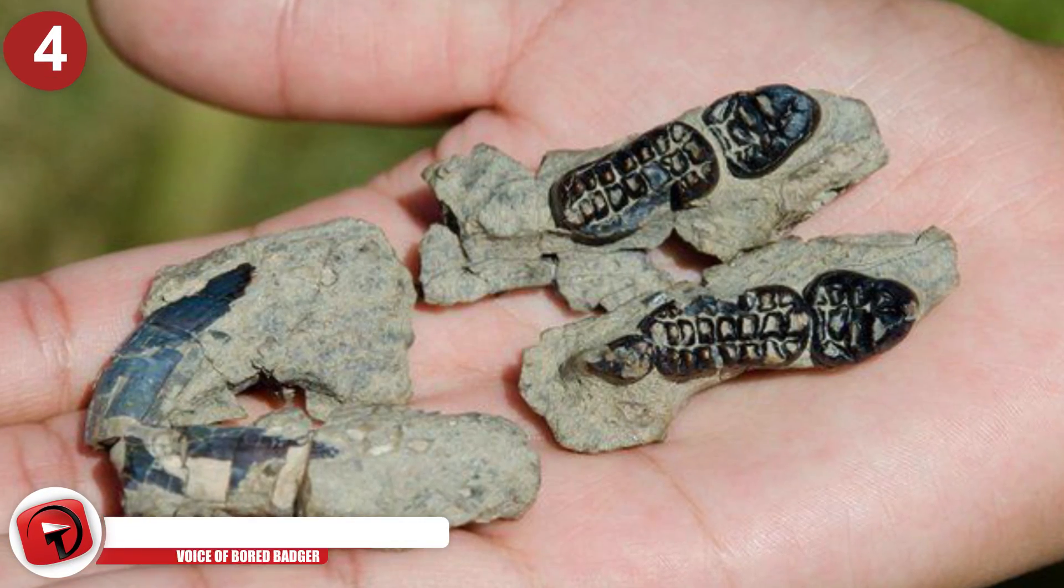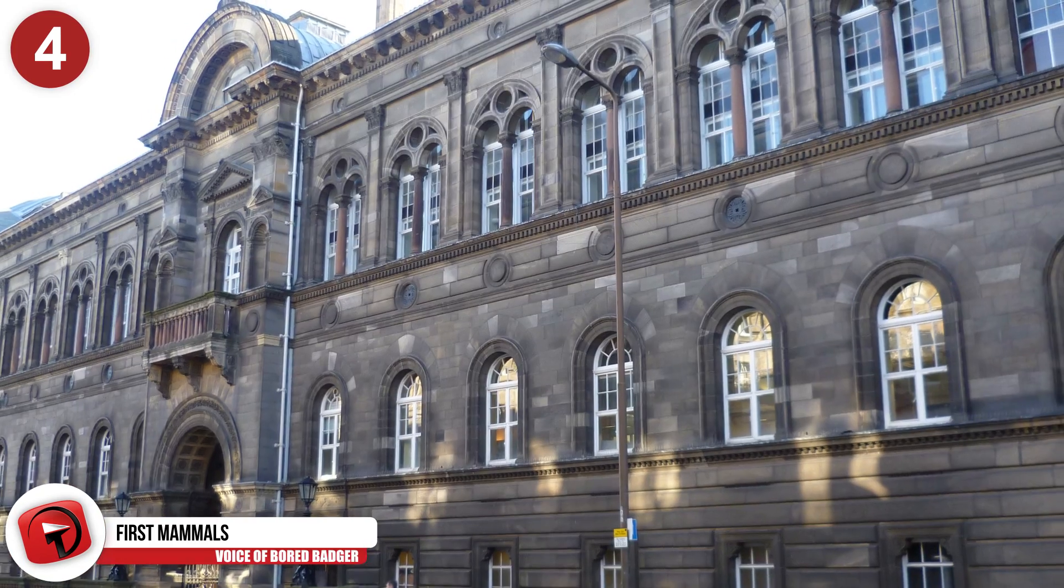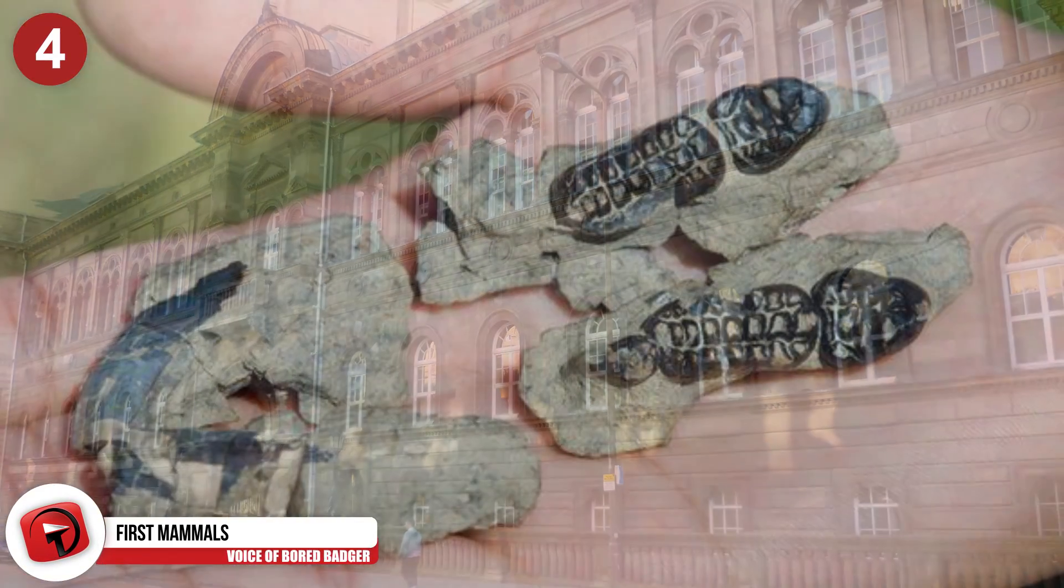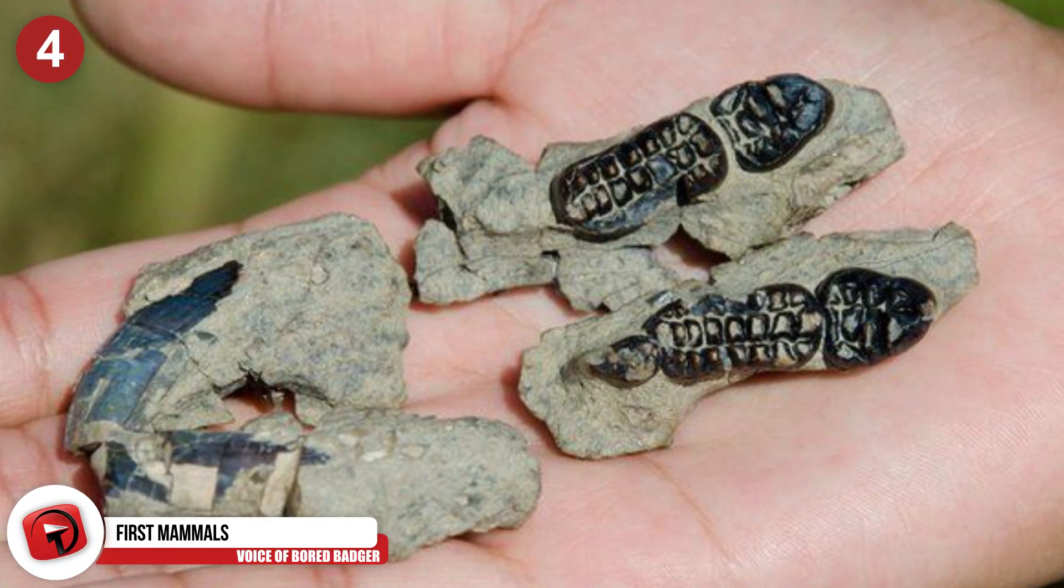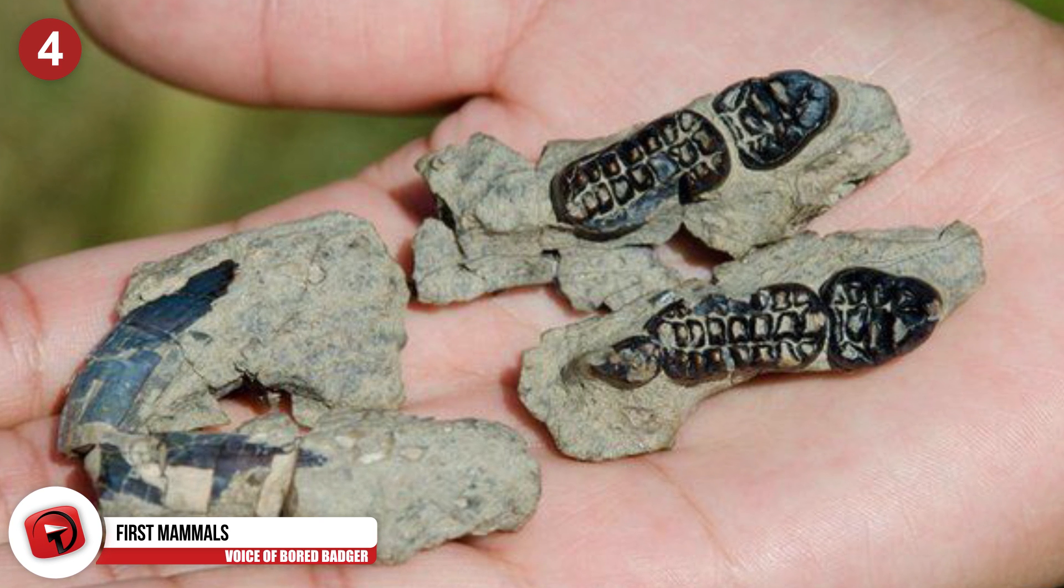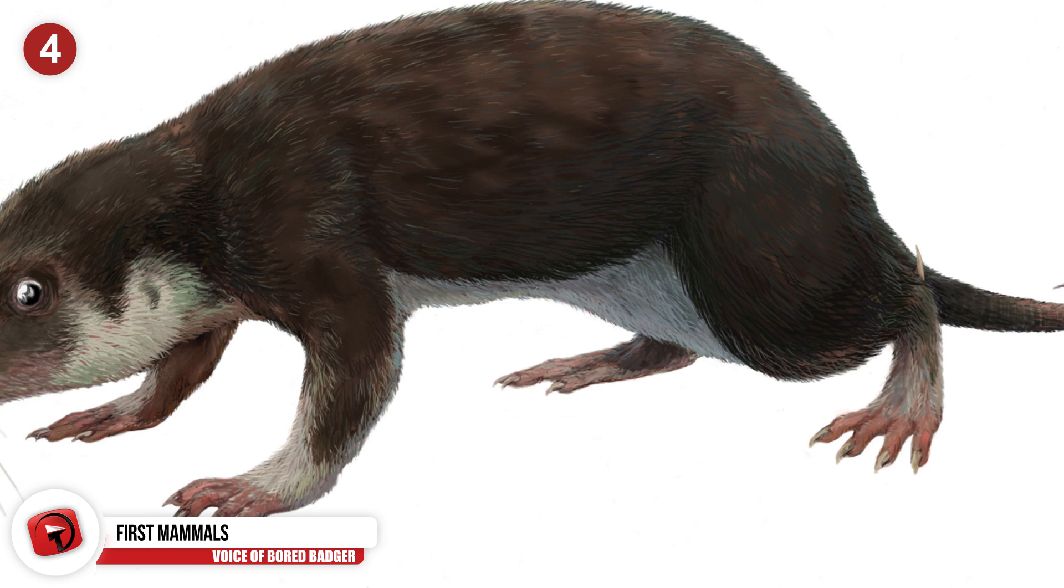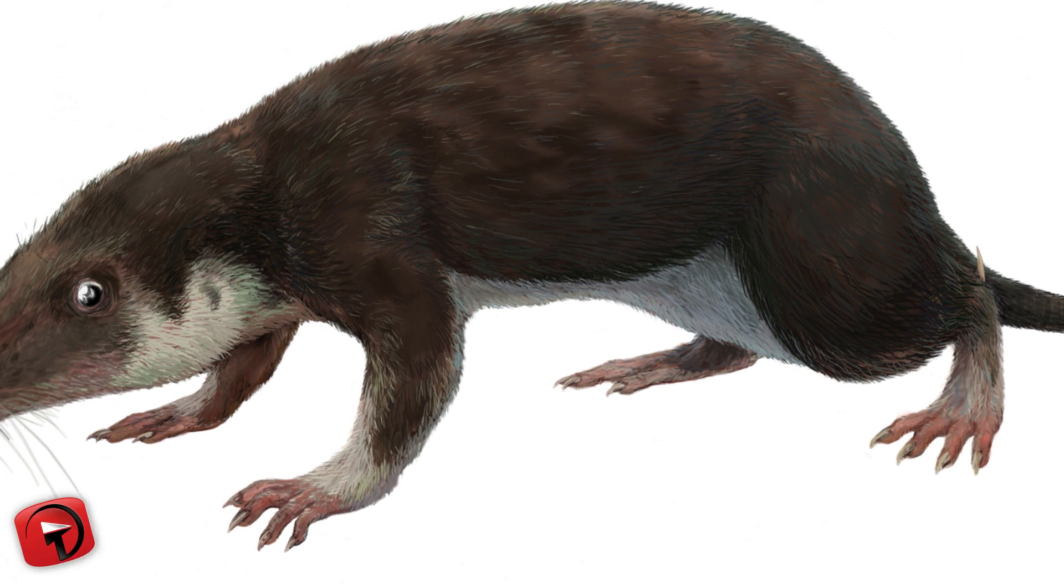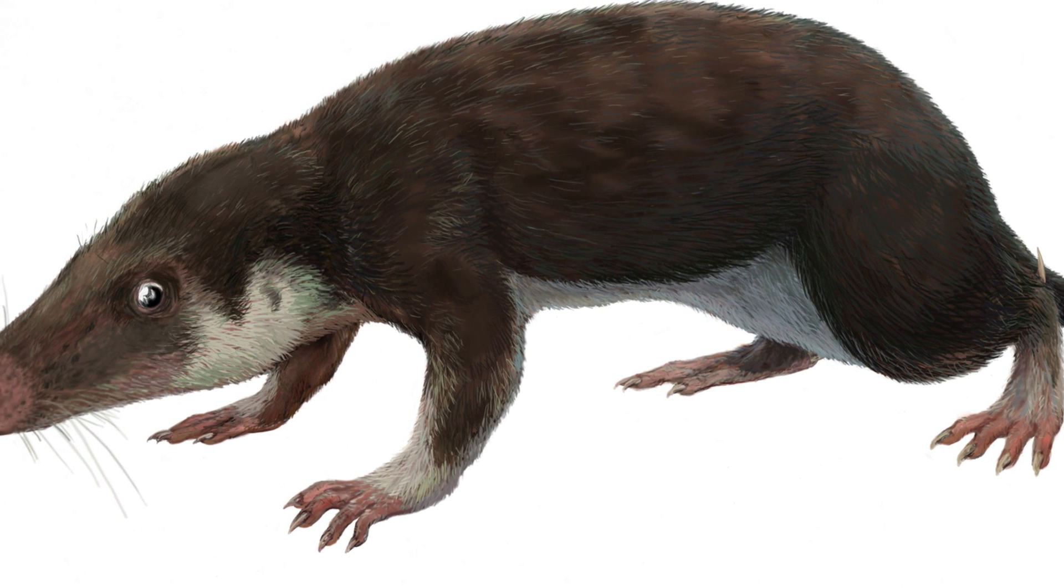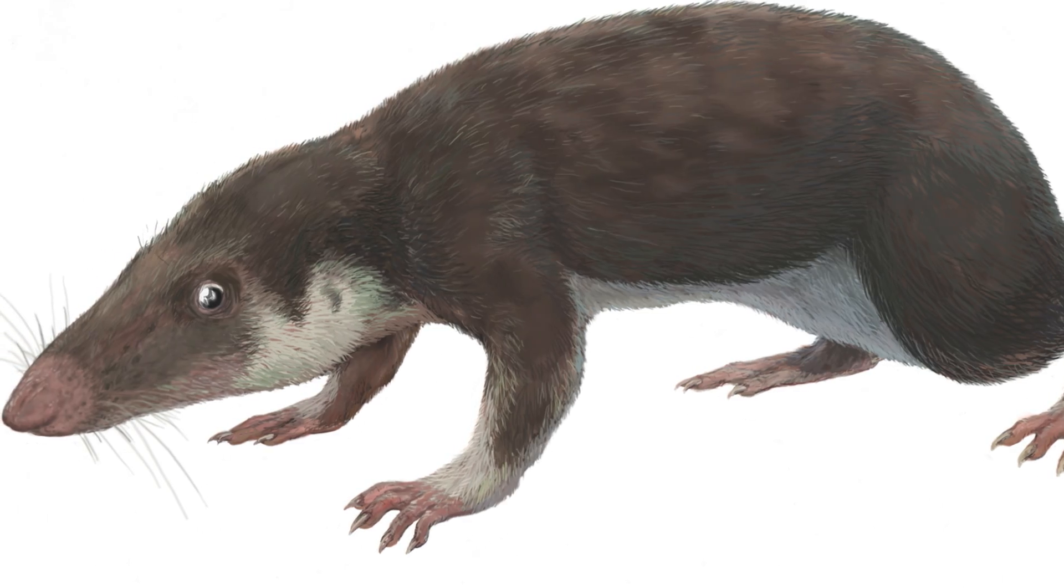Number 4: First Mammals! Researchers from the University of Edinburgh have discovered an ancient species of mammals that survived the notorious extinction of the dinosaurs over 65 million years ago. The reason this find is so significant is that it gives us a glimpse at how mammals began to rule the world previously dominated by their cold-blooded counterparts.